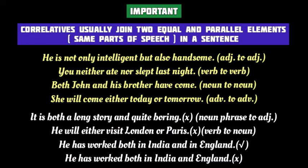Up next, you are going to learn a very important rule: Correlative Conjunctions generally join two equal and parallel elements in a sentence. Equal and parallel elements means they join a noun to a noun, an adjective to an adjective, a phrase to a phrase, a clause to a clause, and so on. So, you cannot use a Correlative Conjunction to join a verb to a noun, an adjective to an adverb, a clause to a phrase, or a word to a clause.